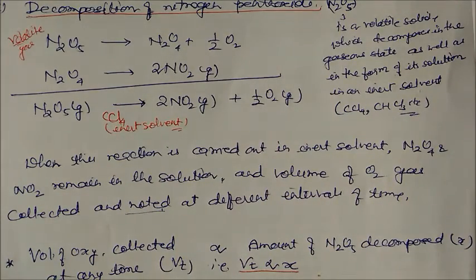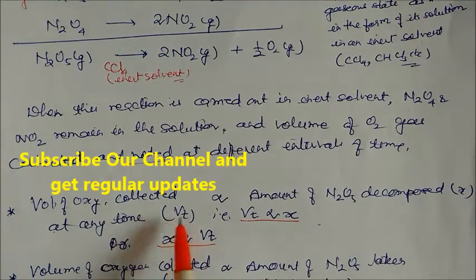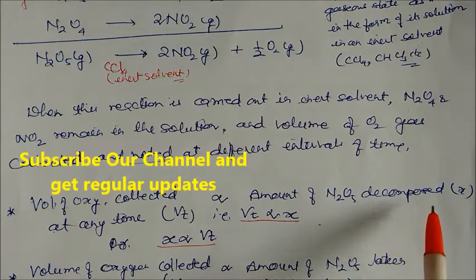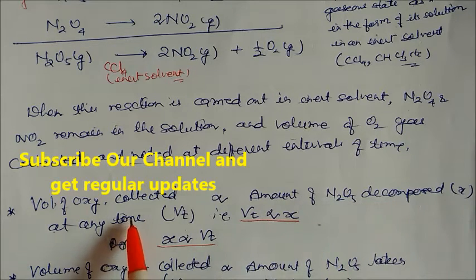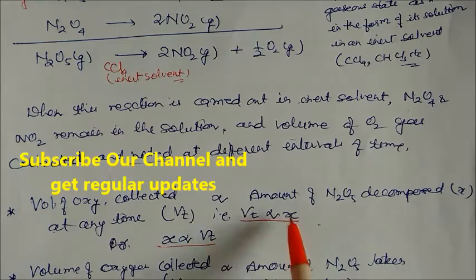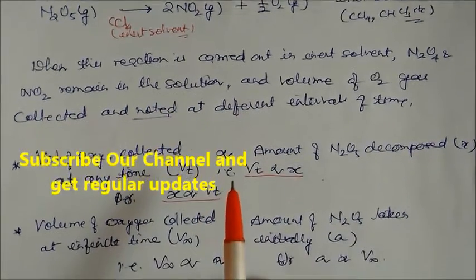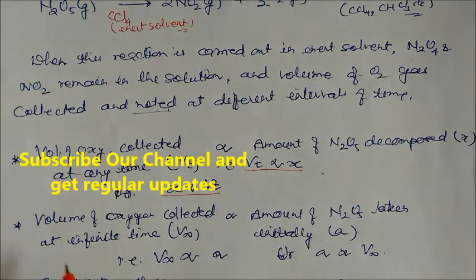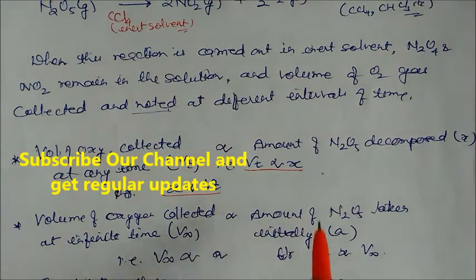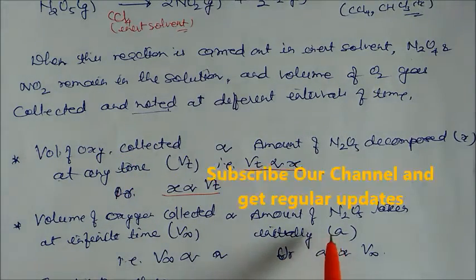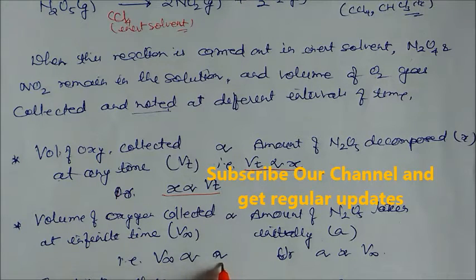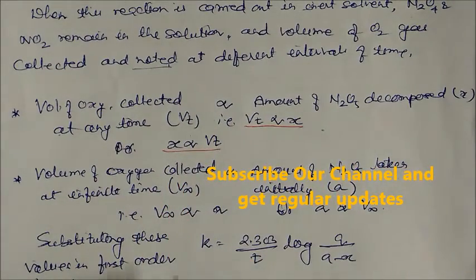The volume of oxygen collected at any time t, denoted Vt, is proportional to the amount of N₂O₅ decomposed, so Vt ∝ x. The volume of oxygen collected at infinite time, V∞, is proportional to the initial amount of N₂O₅ taken — meaning all N₂O₅ is completely decomposed — so V∞ ∝ a.